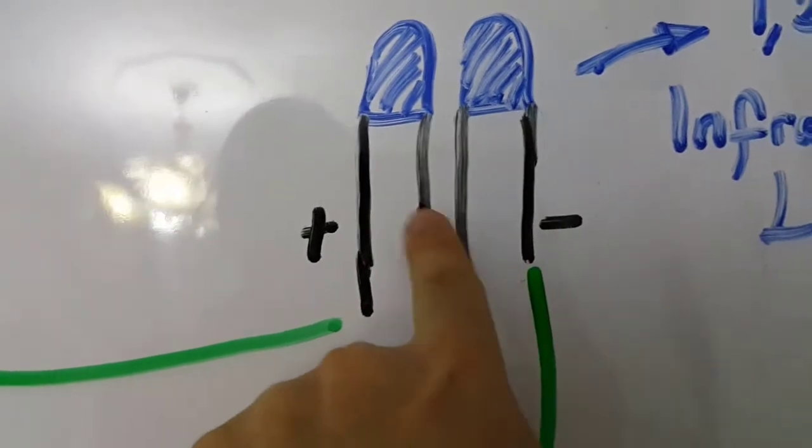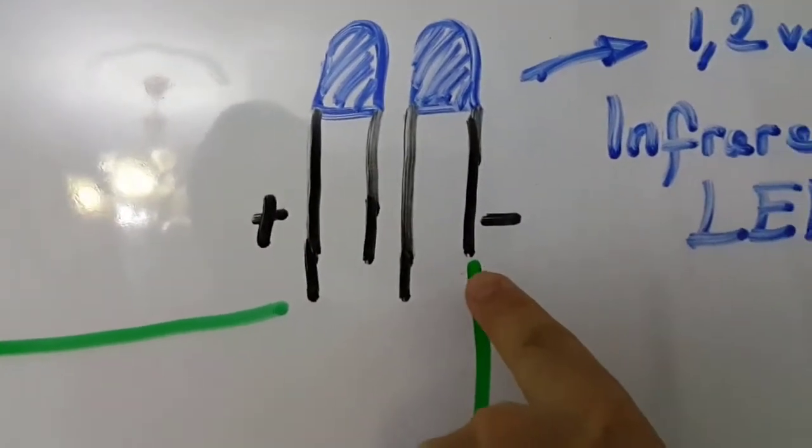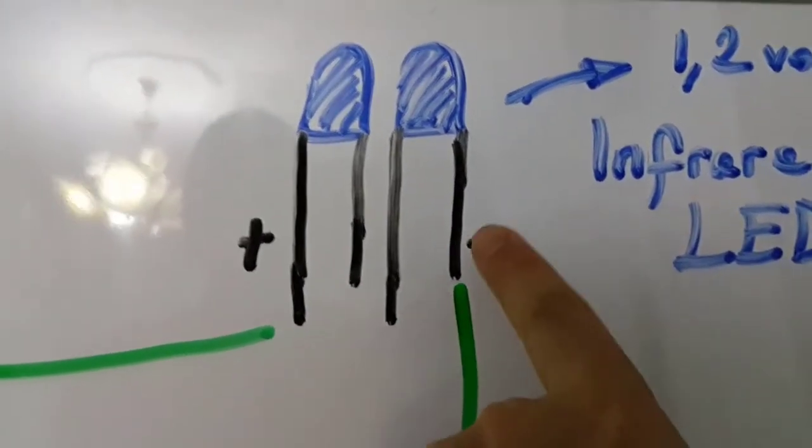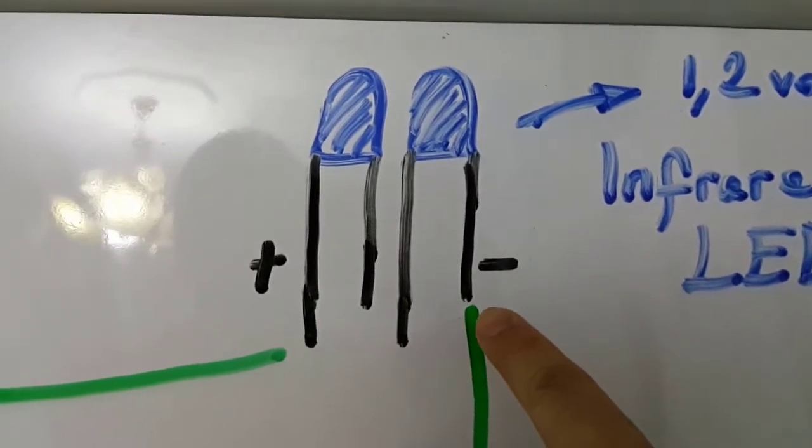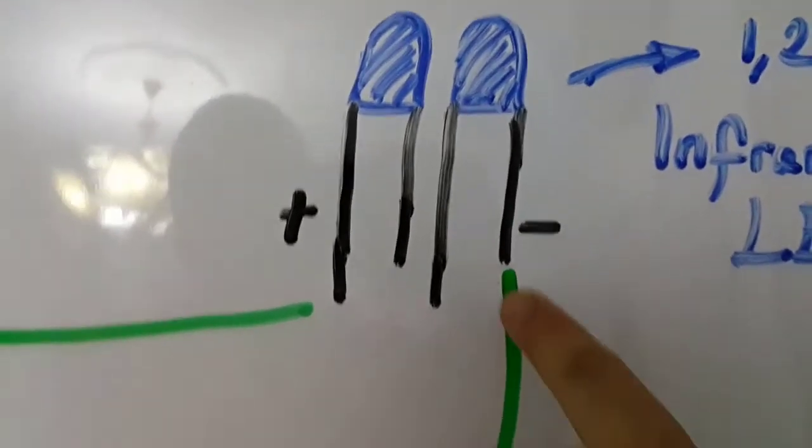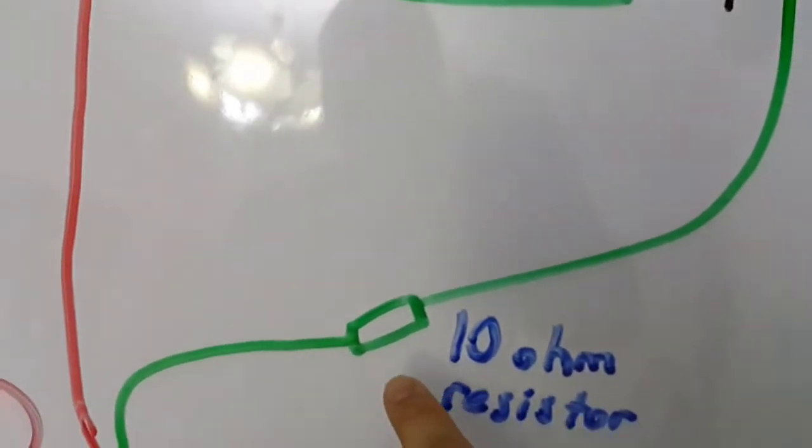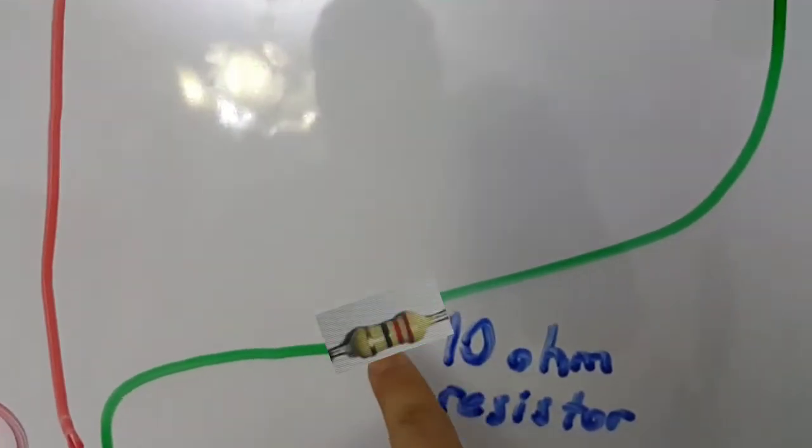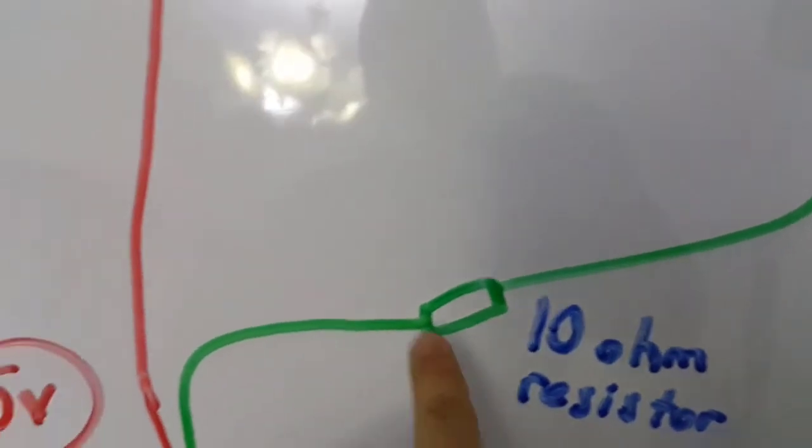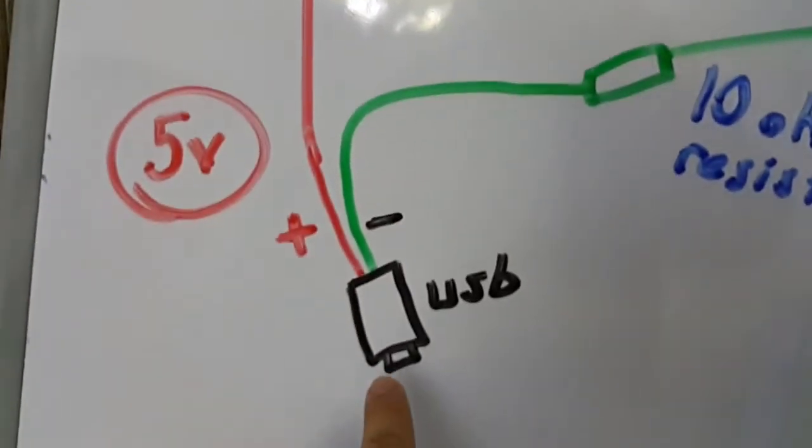And then, from the minus of the other LED, the short leg of the last LED, you get a cable. And you put the resistor, 10 ohm resistor over there to the minus part. And then minus also goes to the USB. That's it.